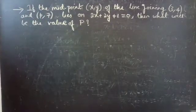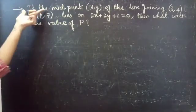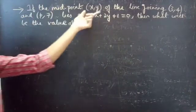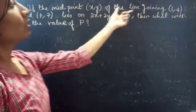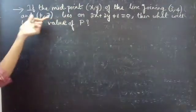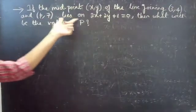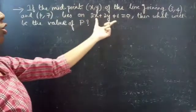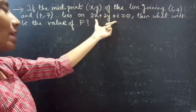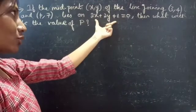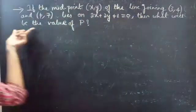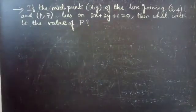Problem: If the midpoint of the line joining (3, 4) and (P, 7) lies on the line 2x plus 2y plus 1 equals to 0, then what will be the value of P?